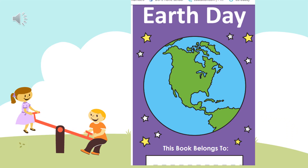You should be on the front cover of your Earth Day book, which shows a picture of the Earth. On the bottom, it says 'This book belongs to.' Go ahead and write your name in there. Make sure that you're writing with capital letters. You can write your first and your last name if you can fit it in there. When you're done, open up your book so you're looking at the inside.